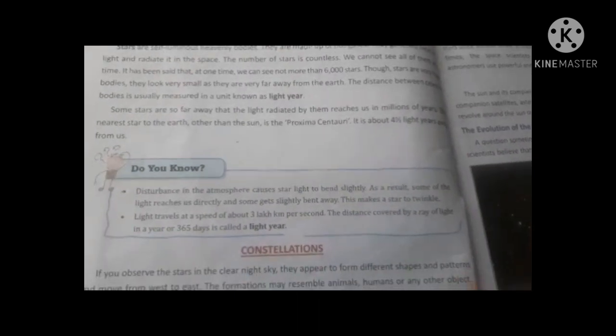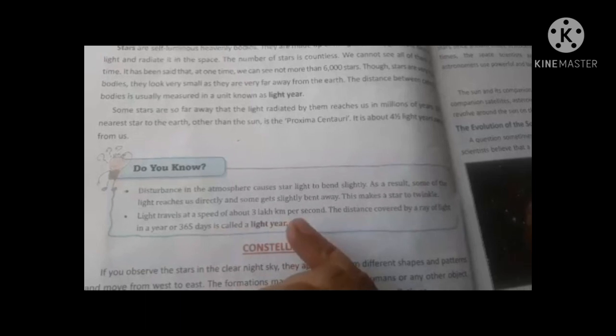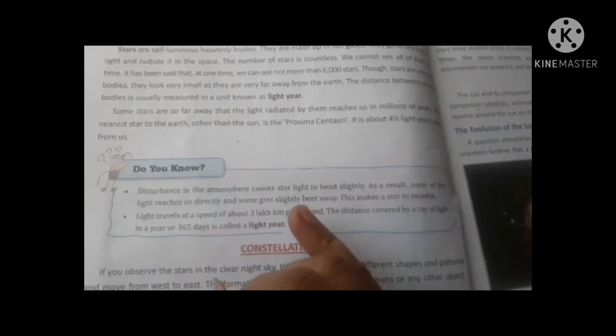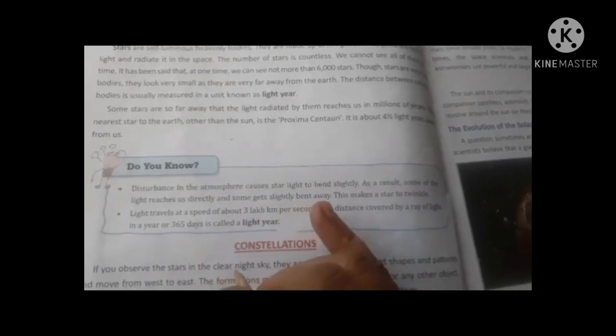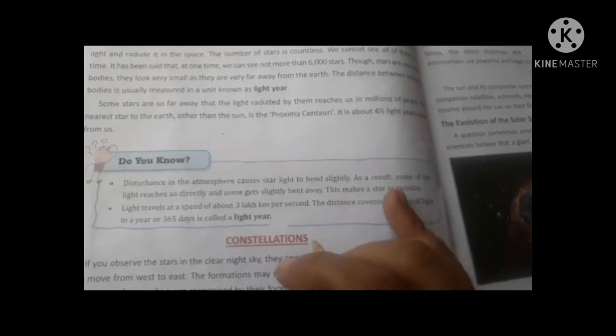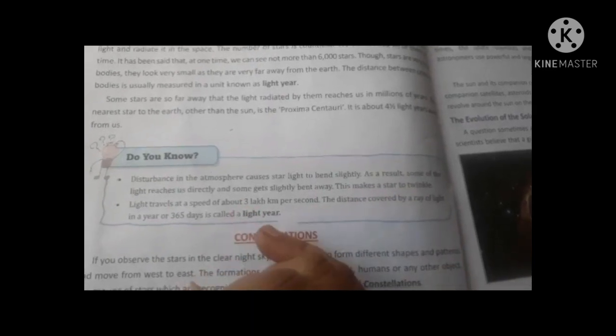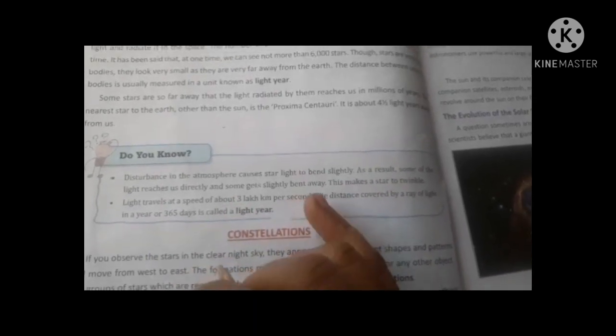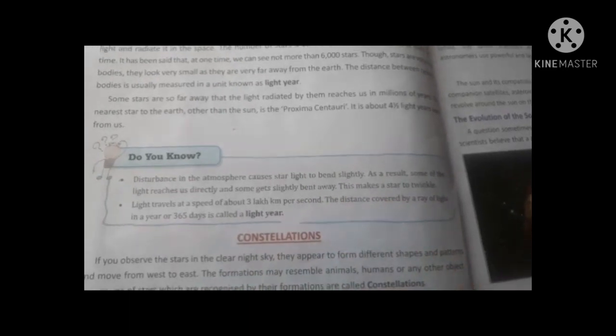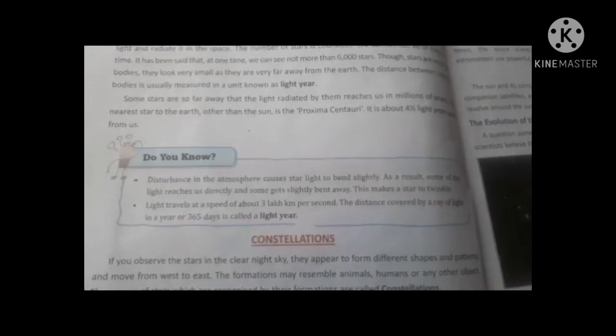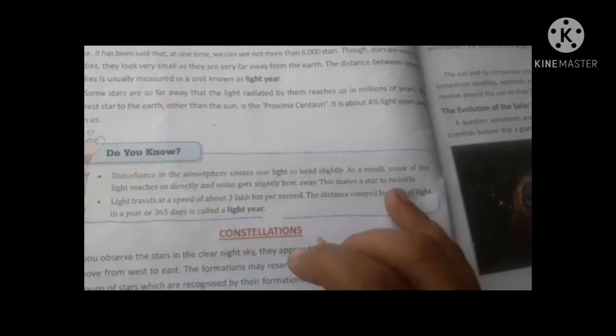Do you know? The atmosphere causes star light to bend slightly. Some of the light reaches directly and some gets slightly bent away. This makes a star twinkle. Sometimes we can see the star light reach back to us, causing the twinkling effect.